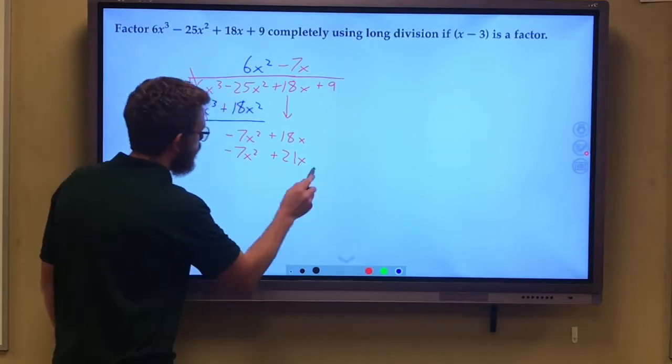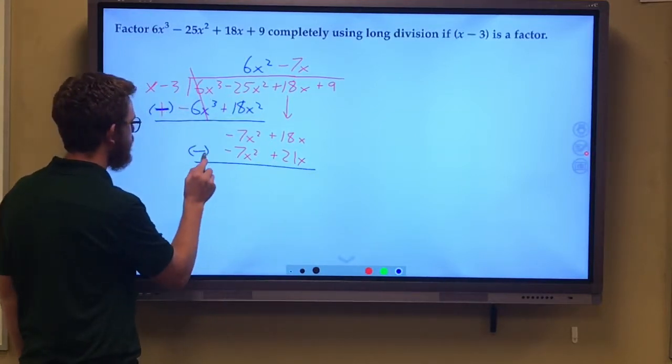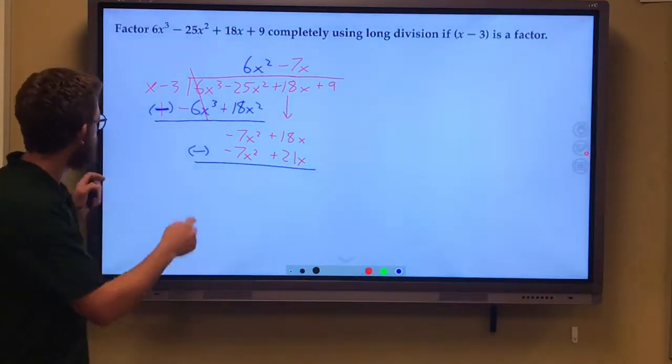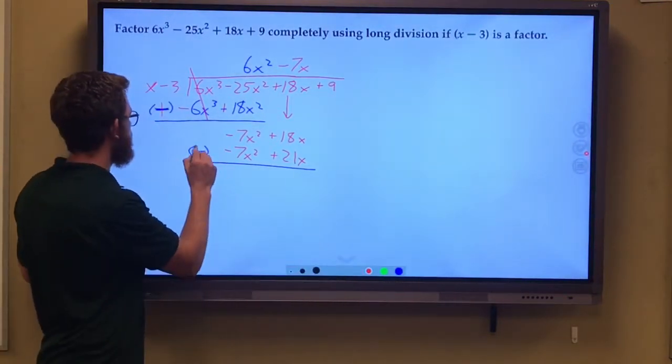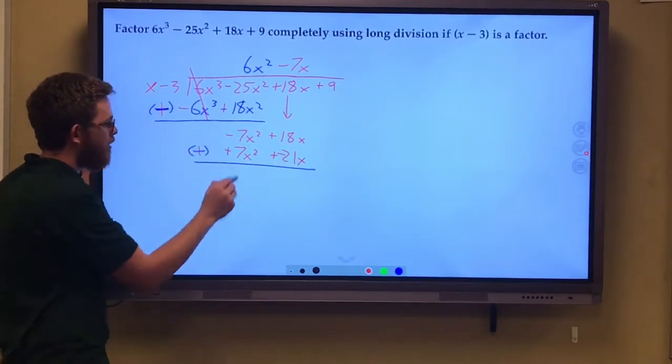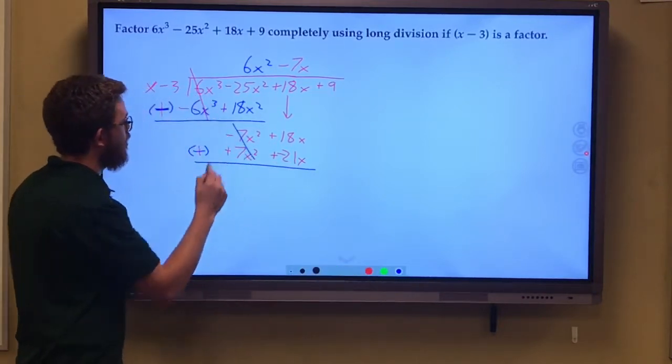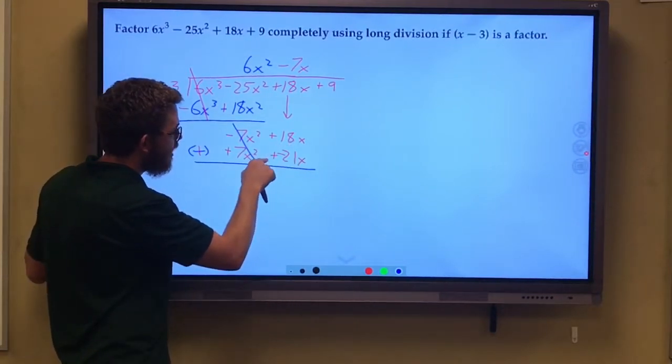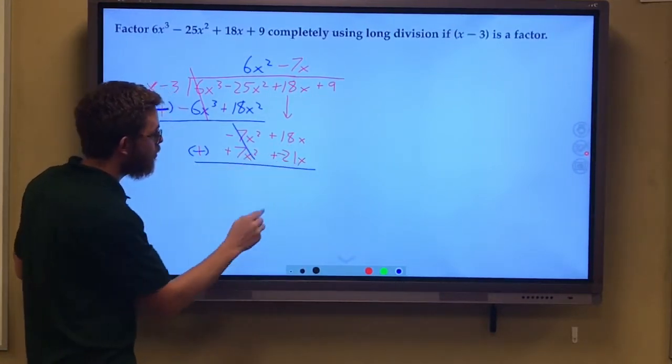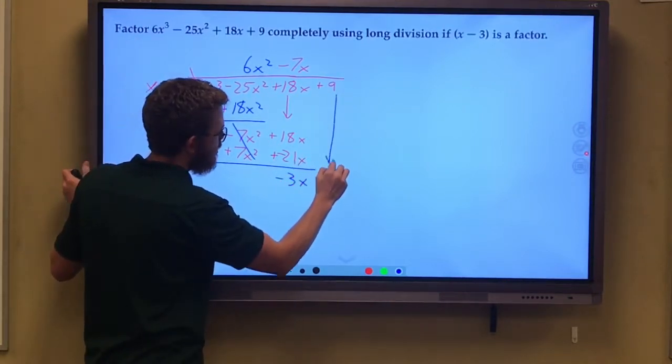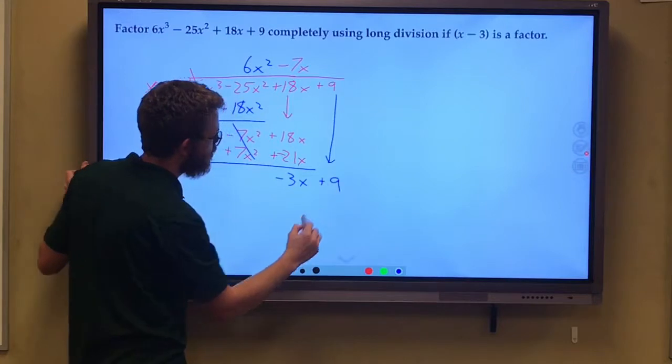So we carry on. We're going to subtract what we've now written down. Just like before, we can add the opposite. Negative 7 plus 7, as hoped, cancels out. 18x plus a negative 21x gives me a negative 3x. Bring that down. Usually it makes sense to do it right here.